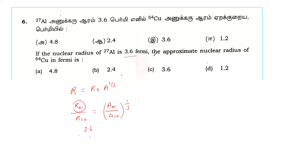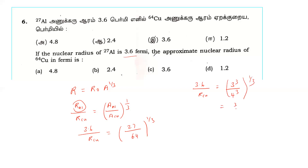So 3.6 divided by radius of copper equals (27/64) to the power 1/3, which equals 1/2 (since the cube root of 27/64 is 3/4... actually 27/64 gives cube root 3/4). Solving: radius of copper equals 3.6 times (4/3) = 4.8 Fermi. The answer is 4.8 Fermi.